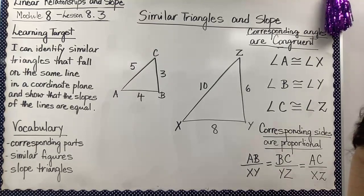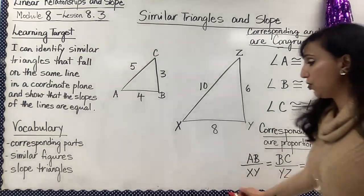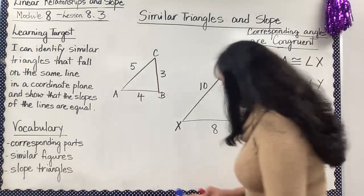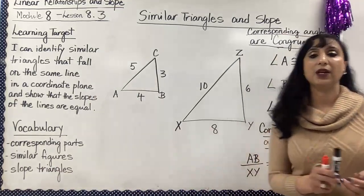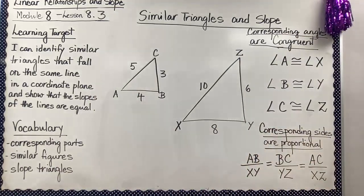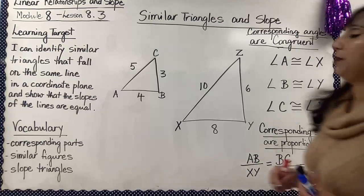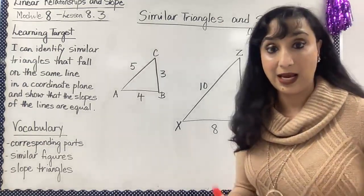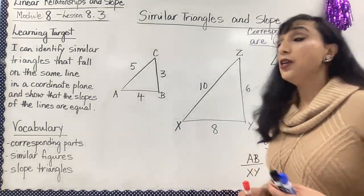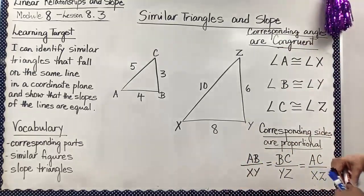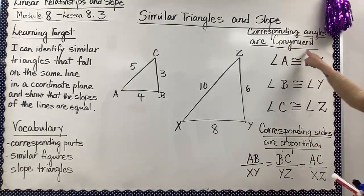Similar figures have corresponding parts. If two triangles are similar, then the corresponding angles are congruent, meaning the angles are exactly the same. So the corresponding angles are congruent.